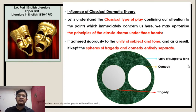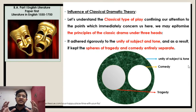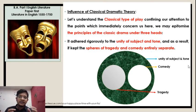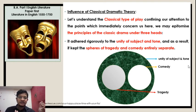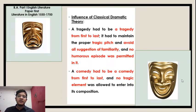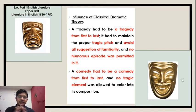Regarding the influence of classical dramatic theory, we can epitomize the principles of classical drama under three heads. It adhered rigorously to the unity of subject and tone, and as a result it kept the spheres of tragedy and comedy entirely separate, as you can see in the diagram shown. A tragedy had to be a tragedy from first to last, maintaining the proper tragic pitch and avoiding all suggestions of familiarity — no humorous episodes were permitted. Similarly, a comedy had to be a comedy from first to last, and no tragic element was allowed to enter into its composition.